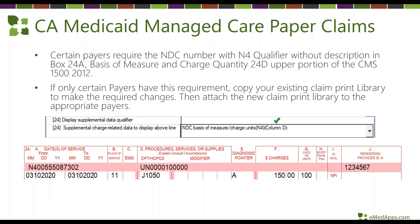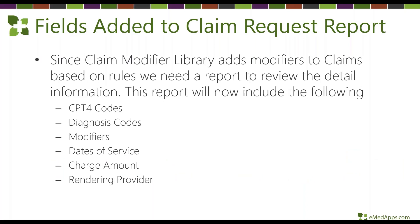For California Medicaid managed care paper claims, there's a very unique requirement for how units and basis of measure are to be reported. If you need to meet this requirement, copy your existing library, make your changes, and tie the new library only to the payers that have this requirement. The claim request report has also had additional fields added so that when you use a claim modifier library, you can review what modifiers are actually going out on your claims.